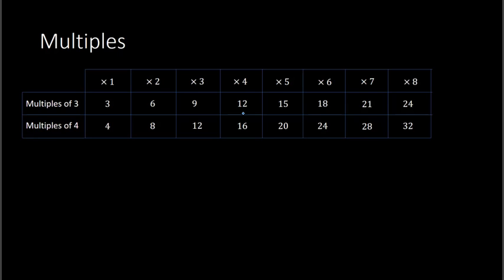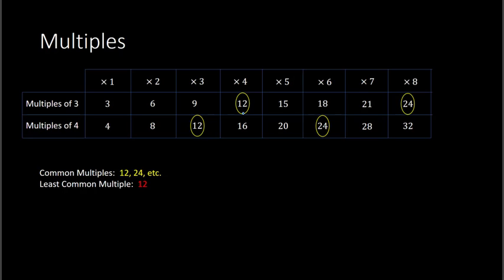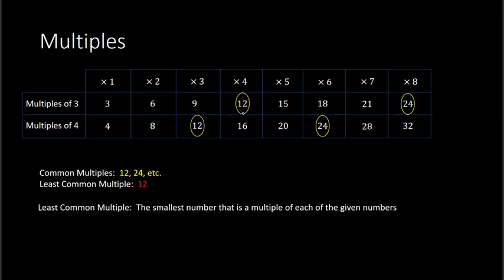So then we can determine common multiples. We see they both have 12 in common, they both have 24 in common, and that would continue on for infinity. So those are all common multiples. Now, least common multiple is the smallest multiple they have in common. So the smallest one they have in common would be 12. The definition of least common multiple is the smallest number that is a multiple of each of the given numbers.